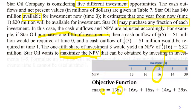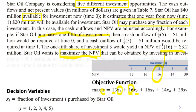And then 16 times x2 — 16 comes from the whole NPV of investment two — but we multiply it by the fraction of investment two that we decide to buy. The definition of the decision variables becomes: Xi is the fraction of investment i purchased by Star Oil. Fraction can be one half, one third, one fifth, and so on.